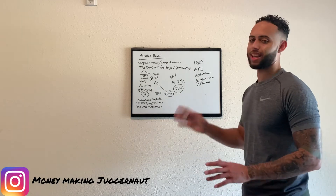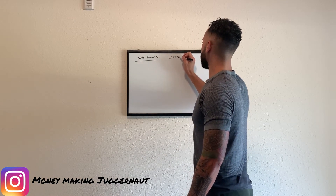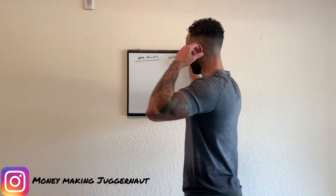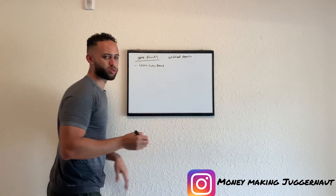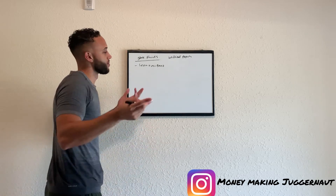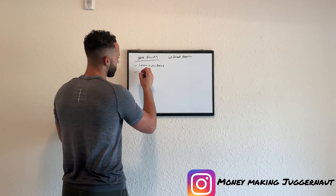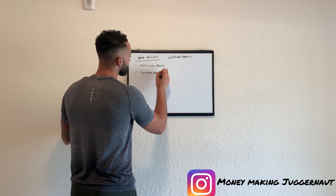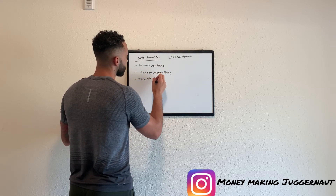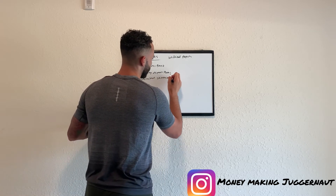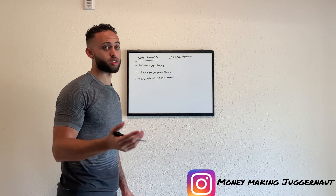Now let's get into state funds. I really like state funds. With state funds, this is going to be unclaimed property. This can be leftover bank accounts — and you might think, how is somebody going to leave a bank account? But it's true. There's a lot of money left over. People pass away, there's money owed to them, family members don't follow up. It can be safety deposit boxes, unclaimed settlements, insurance claims. There's a lot of reasons why people just haven't claimed their money, and it can be sitting at the state treasury's office for a long time.